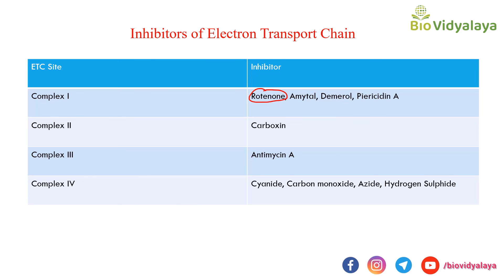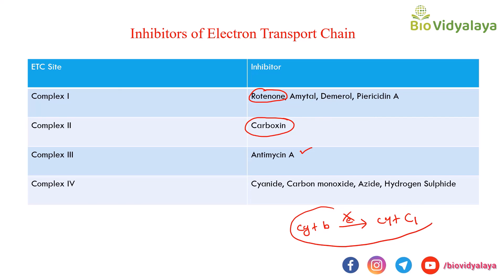The inhibitor of Complex 2 is carboxin — not extremely important but worth remembering. The inhibitor of Complex 3 is antimycin A. Antimycin A is an antibiotic derived from Streptomyces species. It blocks electron flow at Complex 3, specifically inhibiting electron transport from cytochrome B to cytochrome C1.